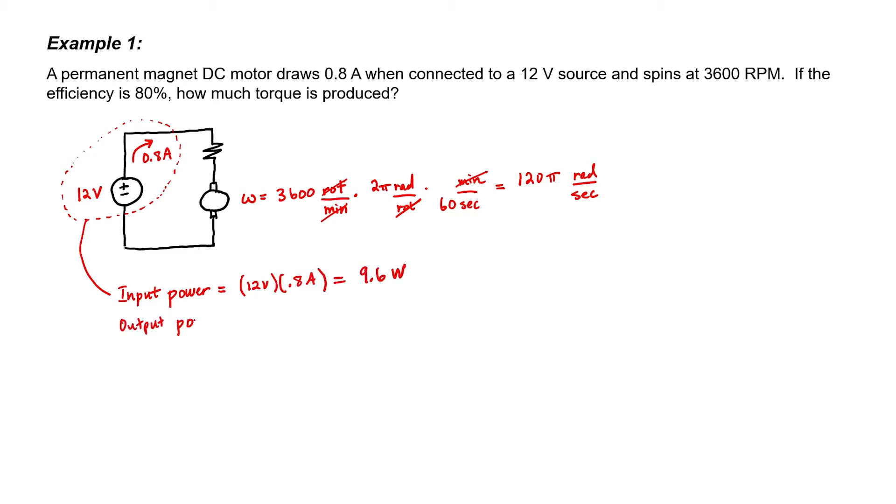Since the motor is only 80% efficient, I can find the output power by multiplying 9.6 watts times 80%. 7.68 watts winds up as rotational power. We know that power is torque times speed. The torque produced in this example is 0.0204 newton meters.